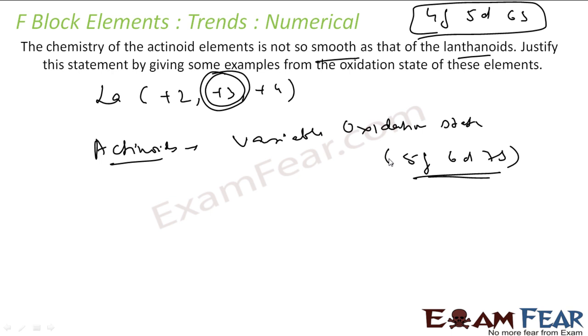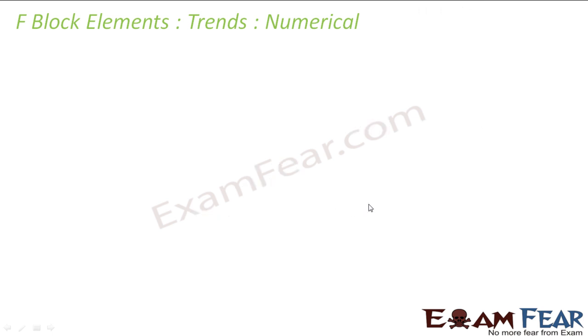And thus the chemistry is not that smooth. It's really difficult because you have so many oxidation states to handle. But here also the common oxidation state is plus 3, though it shows variable oxidation states like plus 4, plus 5, plus 7.